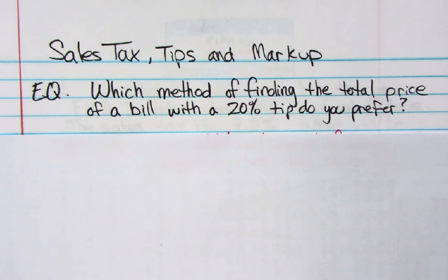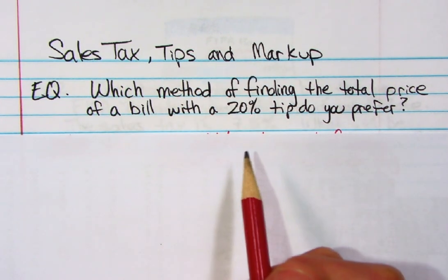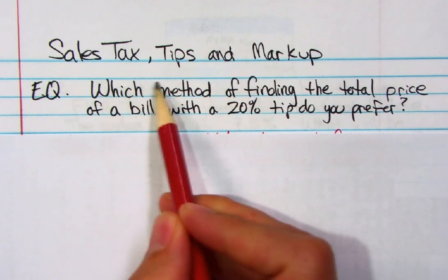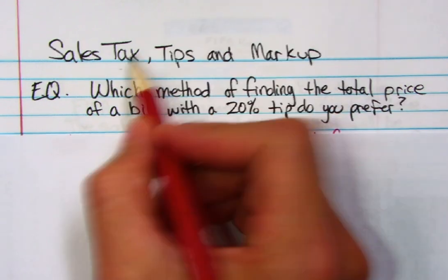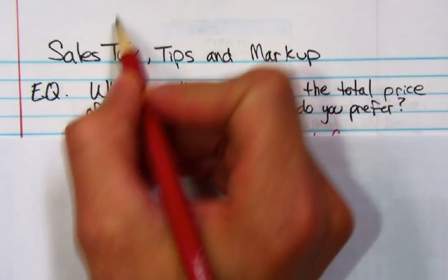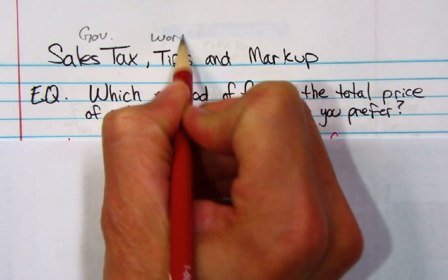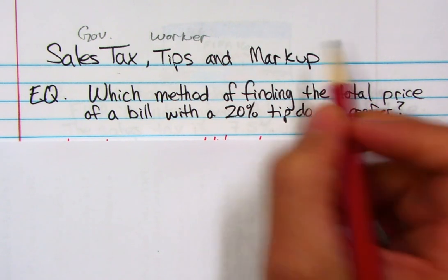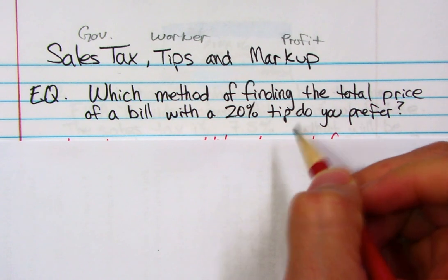Today we're going to jump into the world of sales tax, tips, and markup. Sales tax, tip, and markup are all found the same way. We're going to find out two different methods for finding these three things. Sales tax is money that goes to the government, tips go to the worker — whoever's helping you out — and a markup is when someone who owns a company wants to make some profit, so it goes back to the person selling the product.